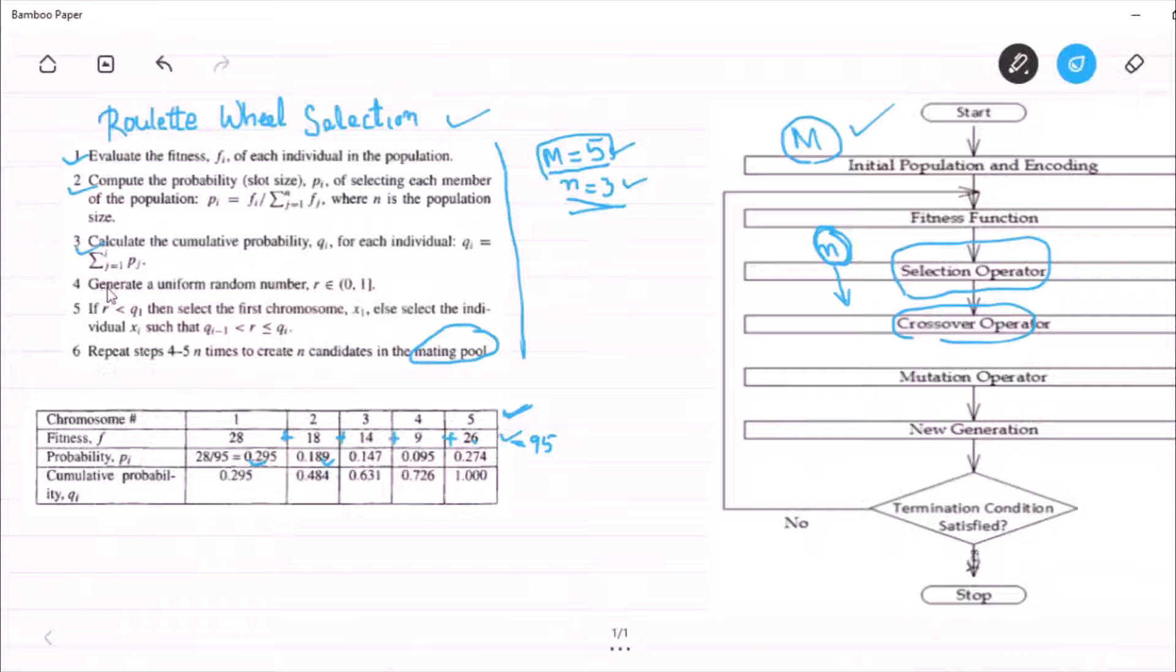Then, apply step number 3 where we are calculating cumulative probability of each individual. Pi is the probability of each individual or each chromosome, and qi is the cumulative probability. The cumulative probability of individual 1 is 0.295, the probability itself.